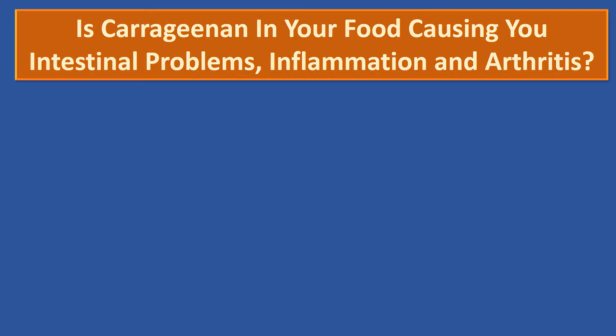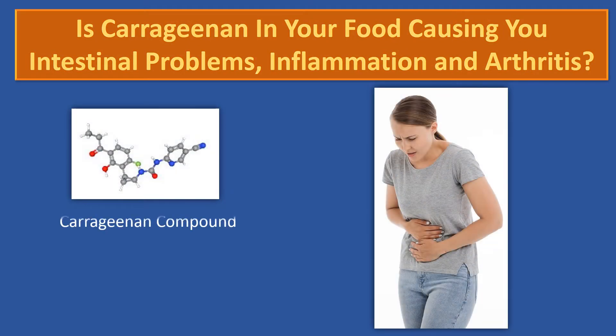Is carrageenan in your food causing you intestinal problems, inflammation, and arthritis? Welcome to Health Fitness and Science. Carrageenan is a chemical extracted from red seaweed and used as an additive to emulsify, thicken, and preserve foods and drinks.